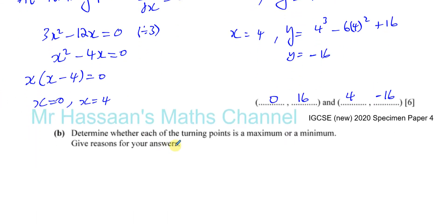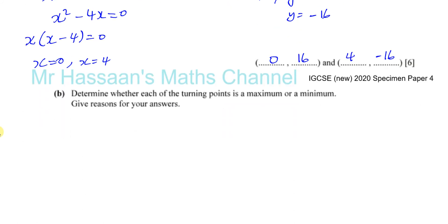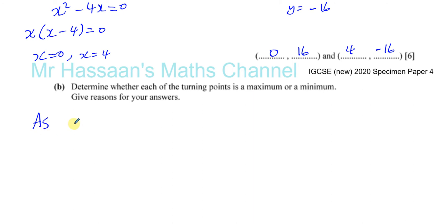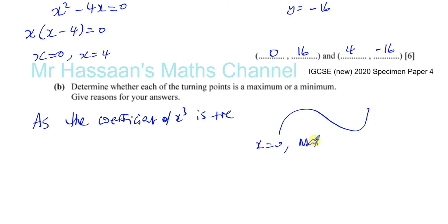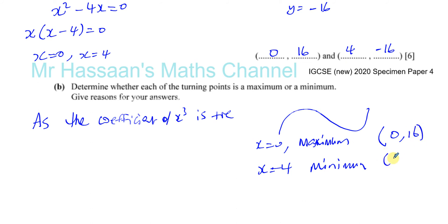It then says determine whether each turning point is a maximum or a minimum. One way: as the coefficient of x cubed is positive, the graph goes up, turns down, then up again. So when x equals zero that must be a maximum, and when x equals four that must be a minimum — because zero comes before four on the curve. So the maximum is at (0, 16) and the minimum is at (4, -16).